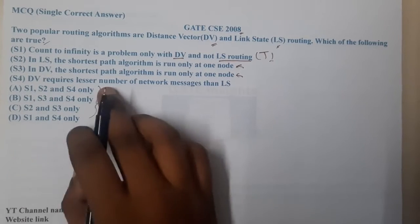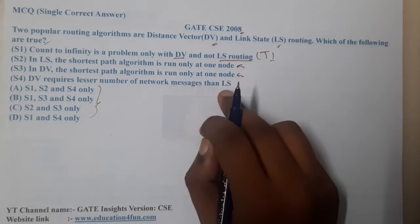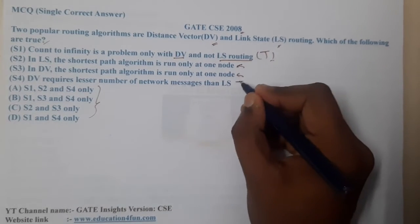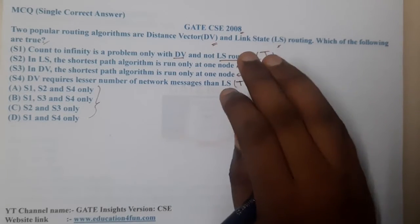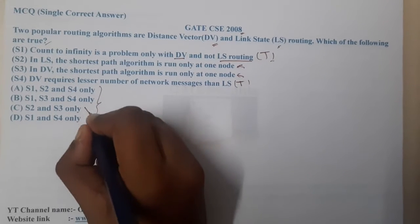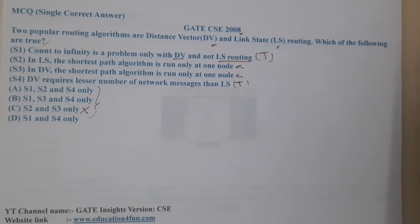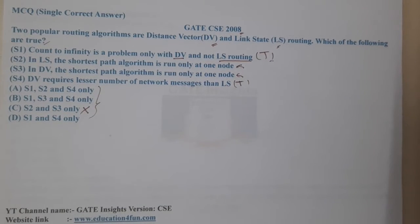S4 says Distance Vector routing requires a lesser number of network messages than Link State routing. Yes, that is true because we are going to send only once. With that conclusion, I can say that S1 and S4 are correct. From here I can eliminate option C. Now S2 and S3 could be correct or could be wrong.